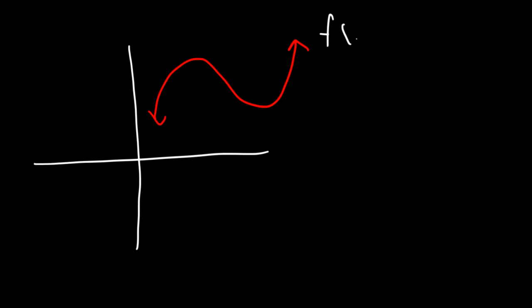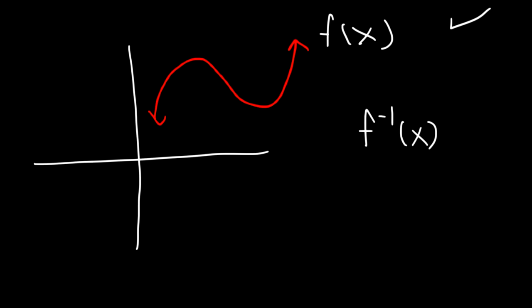Let's say this is f of x. Does it pass the vertical line test? Yes, it only touches it once, so f of x is a function. But what about its inverse? Let's check if f of x passes the horizontal line test. It does not — it touches the horizontal line more than once. So because f of x is not a one-to-one function, the inverse is not a function; the inverse will not pass the vertical line test.